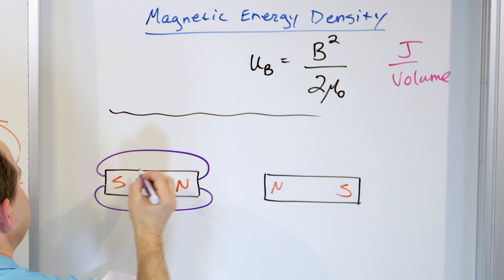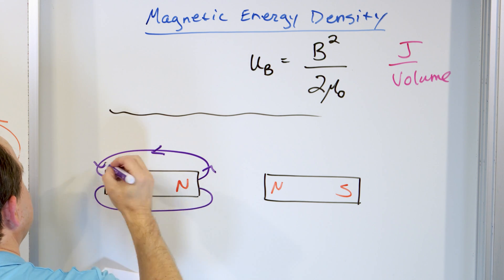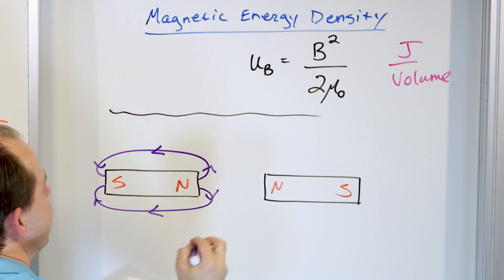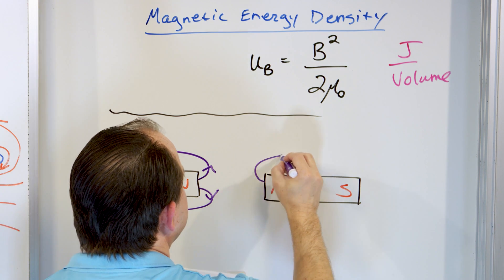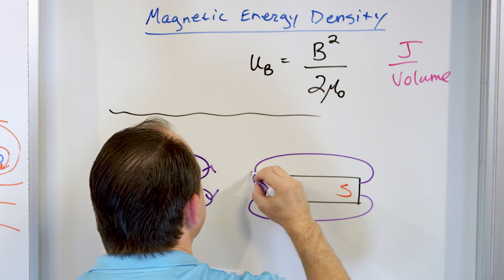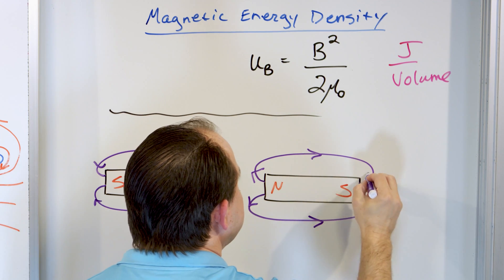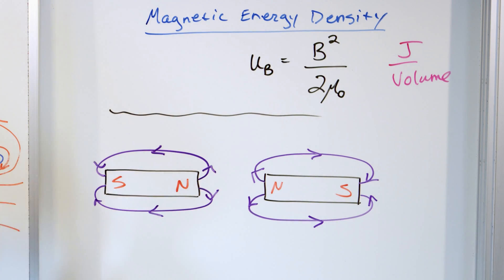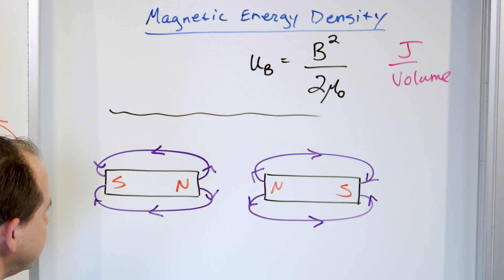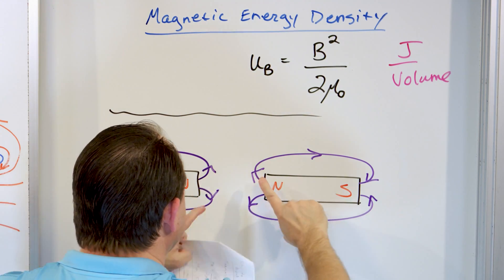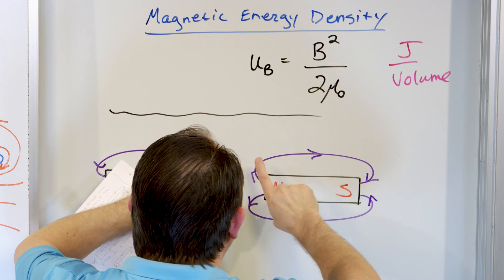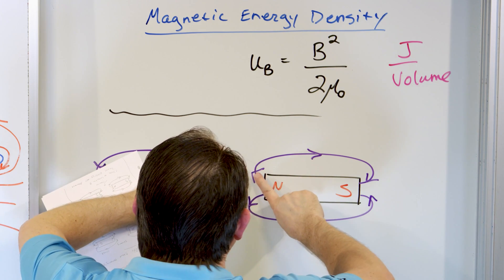It comes out of the north, goes into the south. This way, this way, this way. It goes out of the north into the south. This one is going to go this way and connect to its south pole. Now, what's going to happen as we push these things closer together? Notice that the direction of these arrows are pointed at odds with each other, but the closer I get them, they're going to be sort of additive.